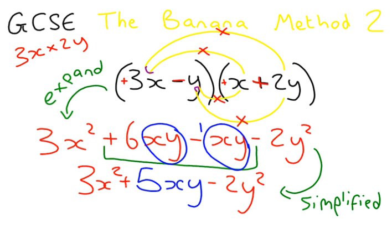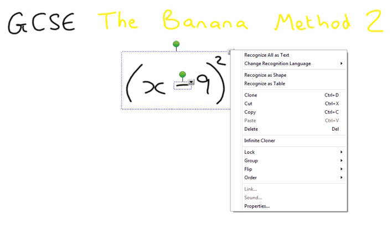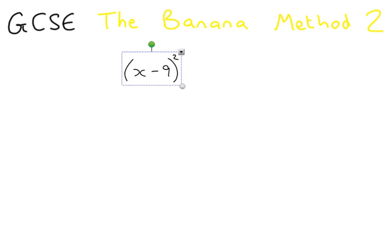The final double bracket question I'm going to show you is a bit of a trick question. When you see it in your exam, it's not going to look like a double bracket. But if we think about what this squared thing means, it actually means you have to times whatever it is by itself. In this case, the thing that we have to times by itself is x minus 9. So what we're going to do is we're going to write it out as a double bracket.